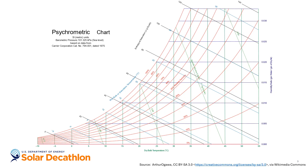A psychrometric chart is how most of us interface with this topic. The chart shown here is a graph of the various parameters of moist air at a constant pressure, often equated to an elevation above sea level.